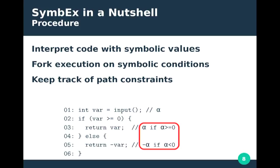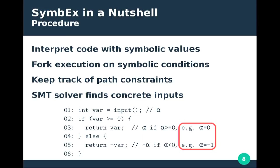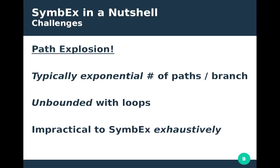We can take these constraints and feed them into a solver to find concrete values that will make execution follow specific branches — for example, setting the input to 0 will go through the true branch, giving a concrete way of exercising that path. However, this is not scalable: the number of paths can be exponential in the number of branches, and in the presence of loops it's unbounded — this is known as path explosion, a very big problem in this field. It is impractical to use symbolic execution exhaustively on unmodified non-trivial code.